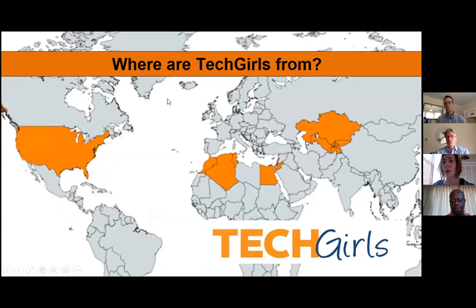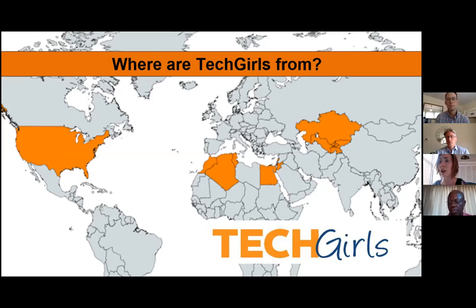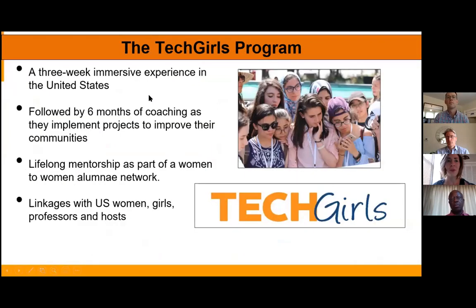The program works with 10 U.S. girls each year from across more than 20 states, with a variety of backgrounds. This provides international students a full scope of what America looks like, transforming barriers and misconceptions about Americans. In the MENA region, Tech Girls works with Algeria, Egypt, Jordan, Lebanon, Morocco, Palestinian territories, and Tunisia — previously including Libya and Yemen, which require a U.S. embassy presence to continue. Four Central Asian countries are also included. The program is structured as a three-week immersive experience in the United States, though COVID shifted it to a virtual format in 2020.